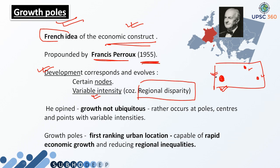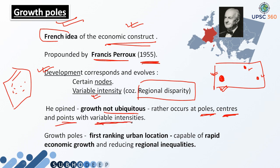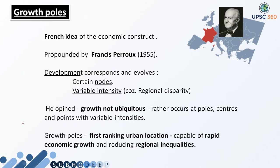That's why it is being said that growth happens in different regions, no doubt, but it happens with variable intensity — because of regional disparity. Regional disparity may be due to many factors: geographical factors, political factors, or other factors. He said that development that happens in different nodes happens with variable intensity. Growth is not ubiquitous — rather, it occurs at few regions: growth poles, growth centers, and growth points, and that too with variable intensity. Growth pole is much bigger than growth center, which is bigger than growth point, because growth point is the starting point of growth.